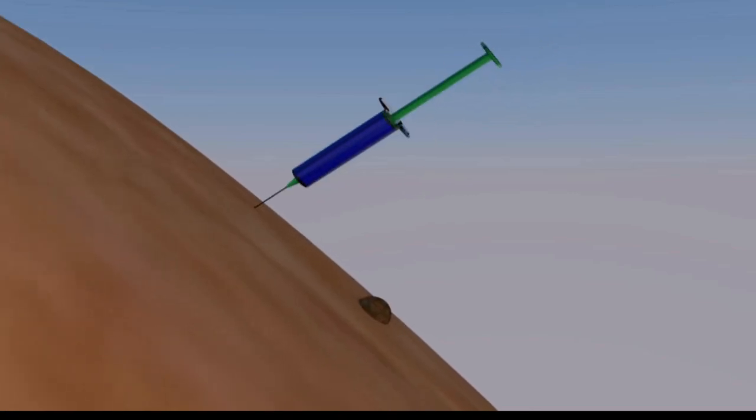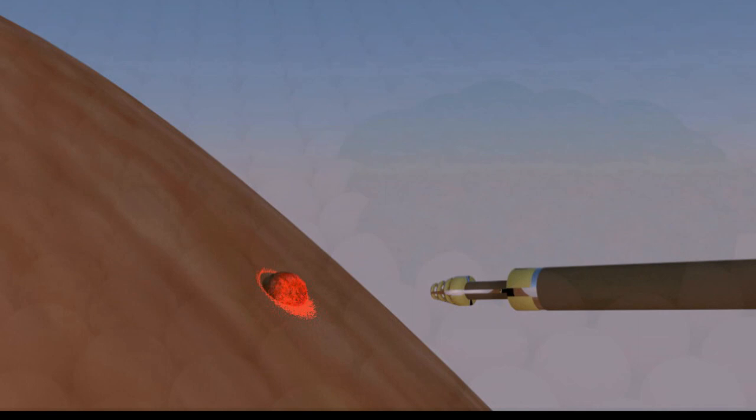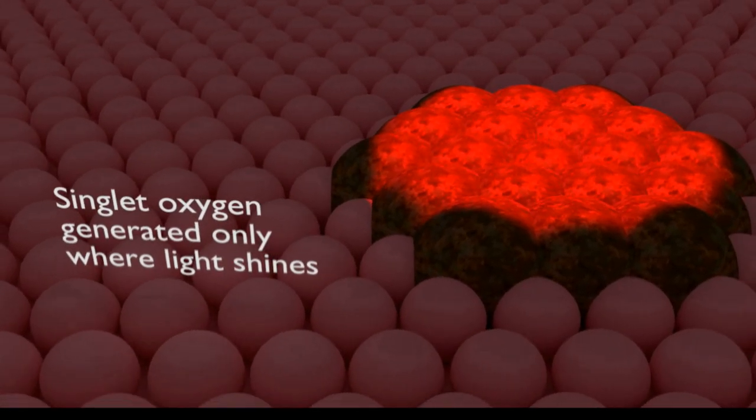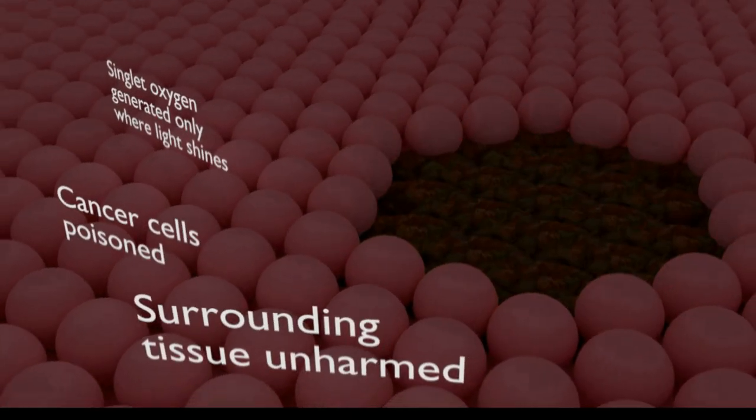Why would you want to do this? Because if you inject a cancer patient with photosensitizer, you can generate singlet oxygen in one precise location just by shining a laser on it. This gives surgeons a minimally invasive way of killing tumors using chemistry, oxygen, and light.